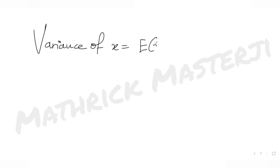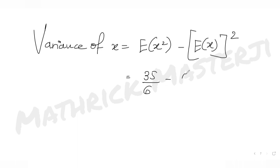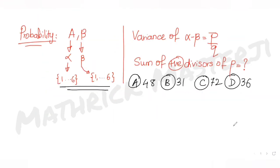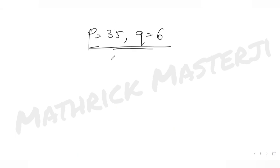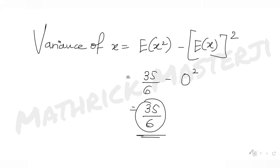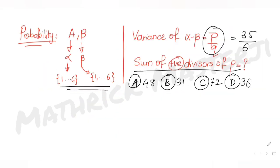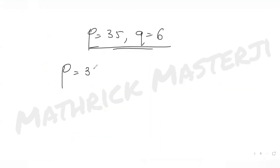The variance is E[X²] − (E[X])² = 35/6 − 0 = 35/6. Since variance of alpha minus beta equals p/q = 35/6, and 35 and 6 are co-prime, we get p = 35 and q = 6. The positive divisors of p = 35 are 1, 5, 7, and 35.